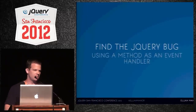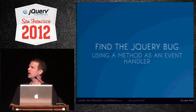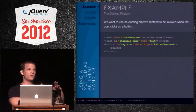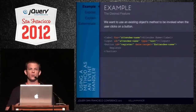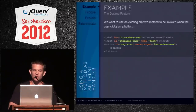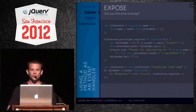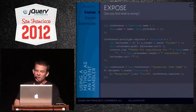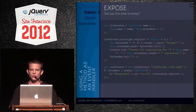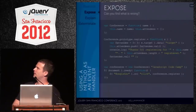Here's an interesting one that semi-new front-end developers run into. Let's say you have a method in some object and you want to use it as an event handler passed to jQuery. We have a label, text input, and a register button. There's a conference constructor with a name, an attendees array, and a register method that grabs the input value, pushes it into the attendees array, and console logs a confirmation message.